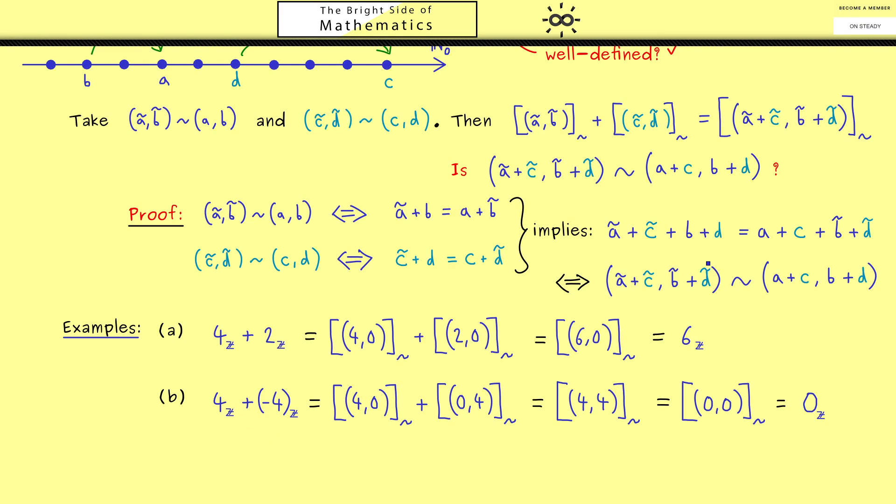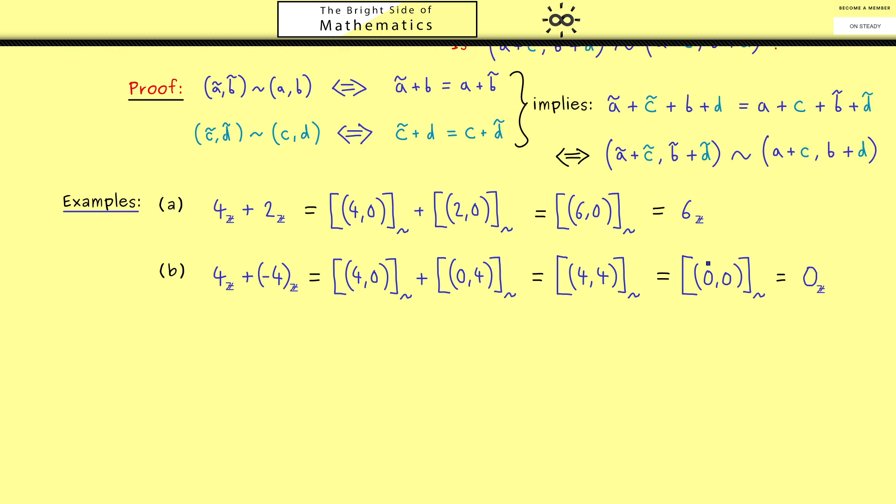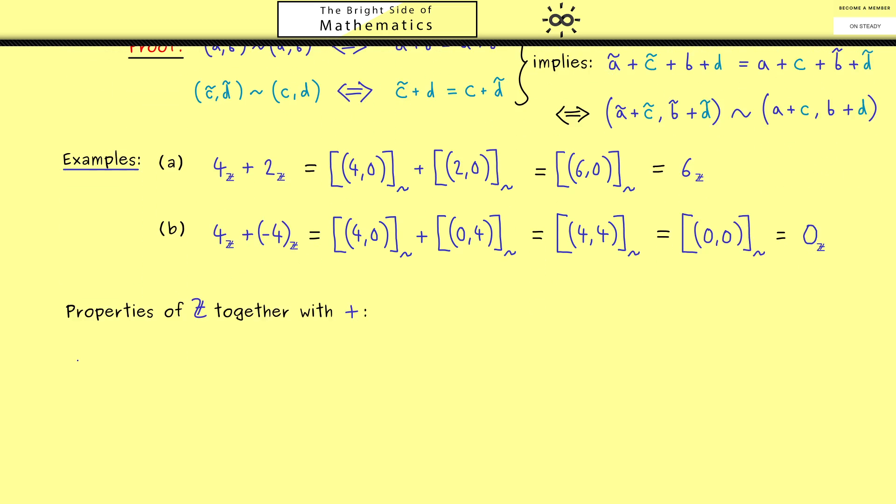I think it's a good idea to summarize all the things we know about the integers. In other words, the properties the set ℤ has together with the addition. Please keep in mind the addition here is given as a map, and of course it's not the same map we had for the natural numbers. However, we still have the same properties.